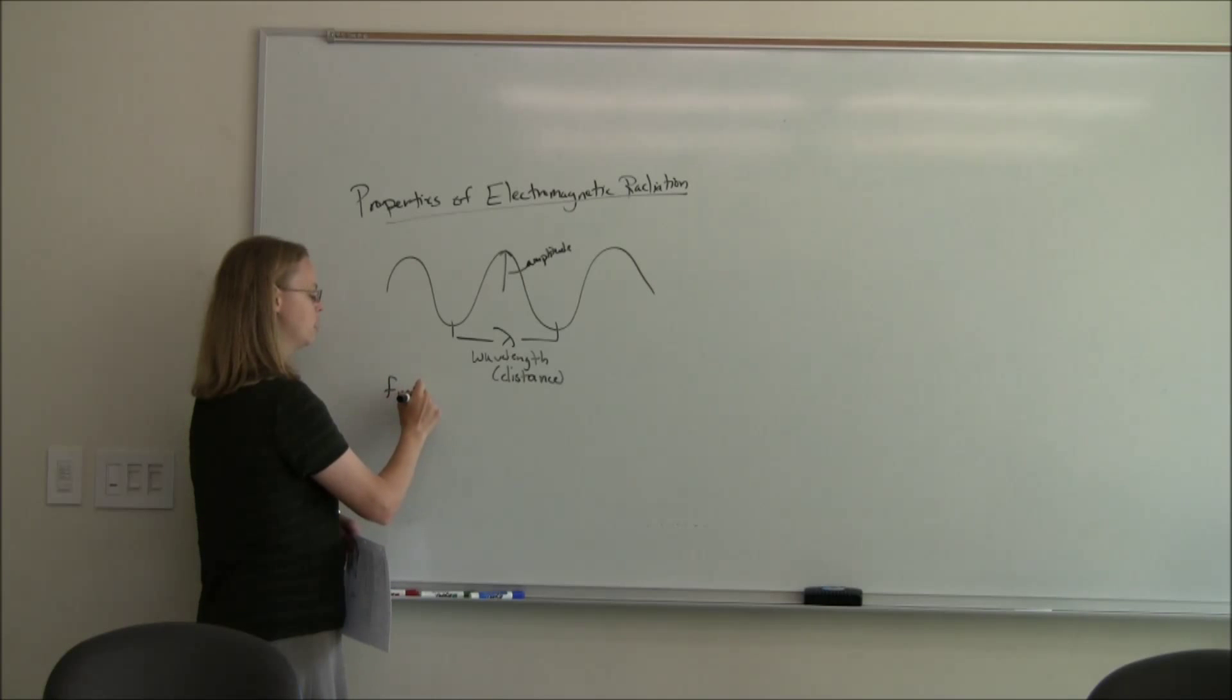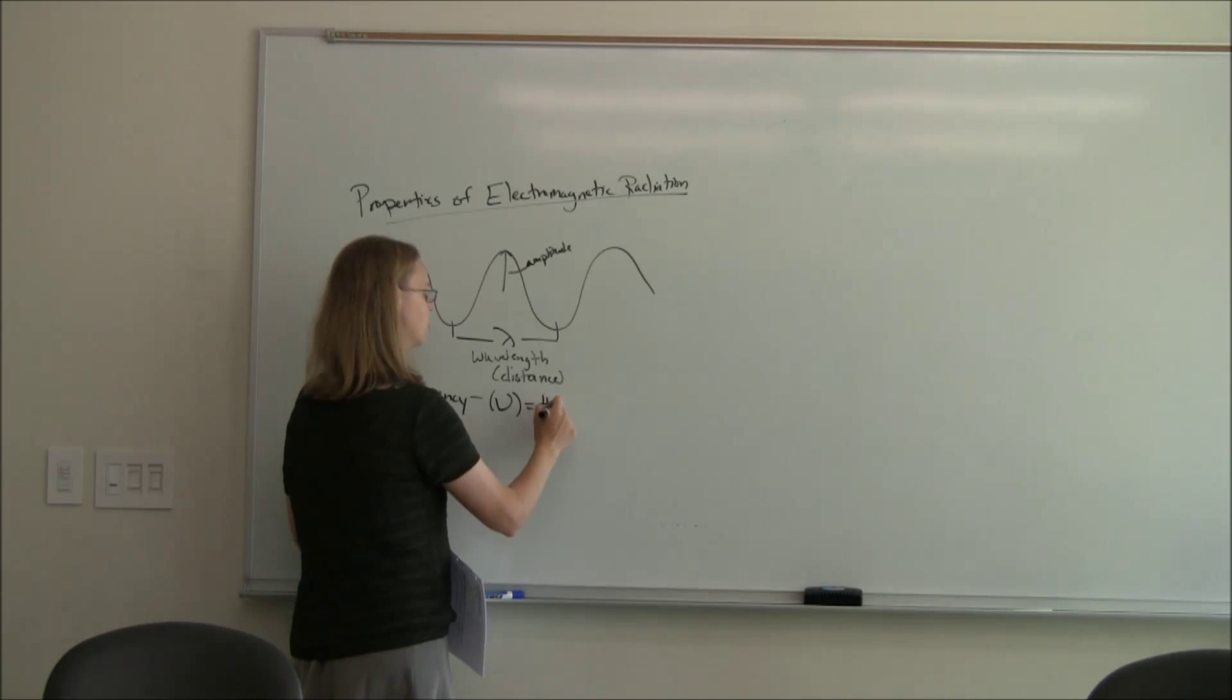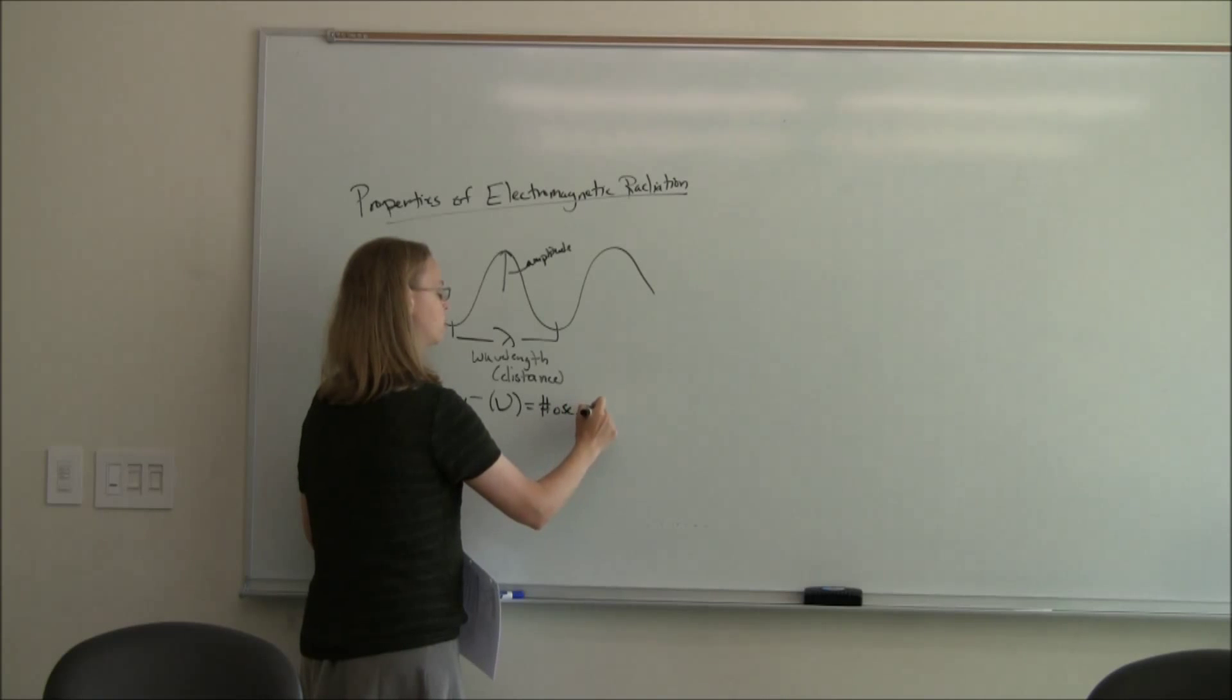If we wanted to, we could calculate the frequency. And so the frequency, which is often given the symbol nu, is the number of oscillations per second.